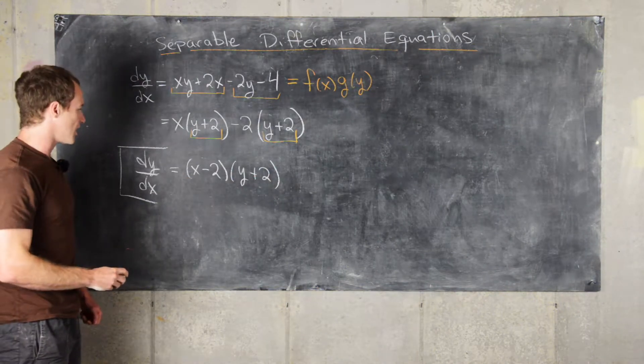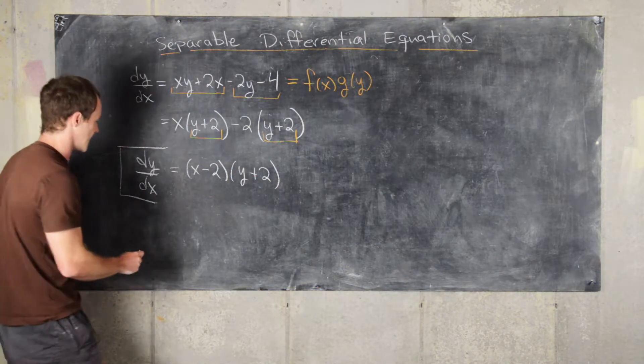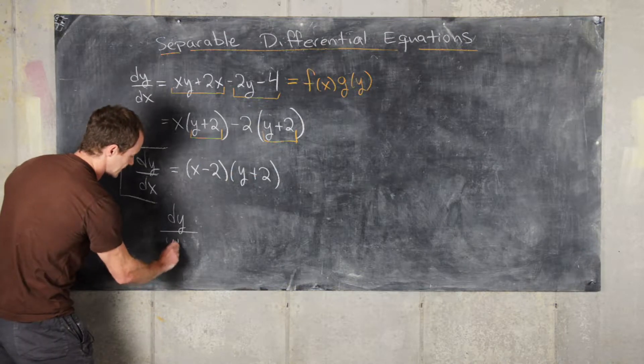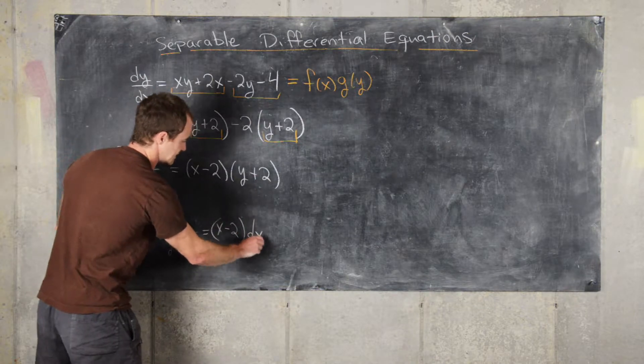If we recall, the first step is to write all the x's on one side and all the y's on the other side. So that'll give us dy over (y plus 2) equals (x minus 2)dx.